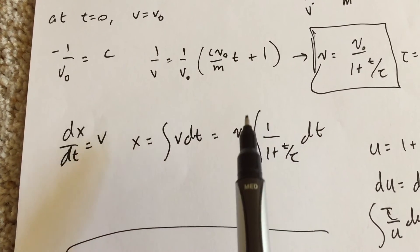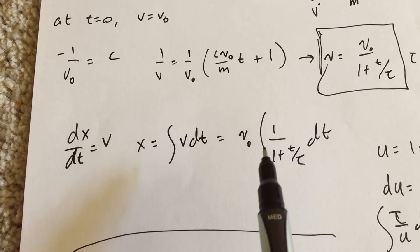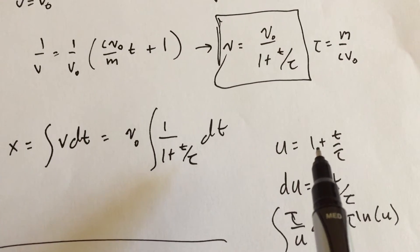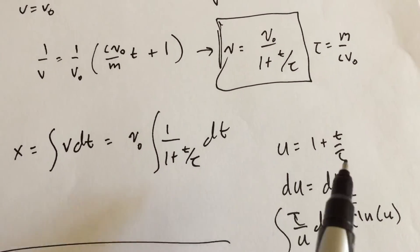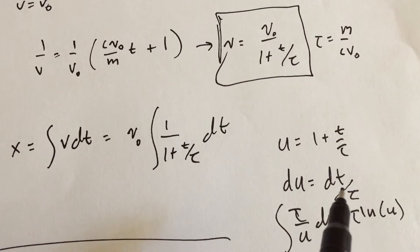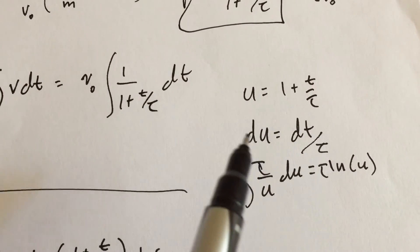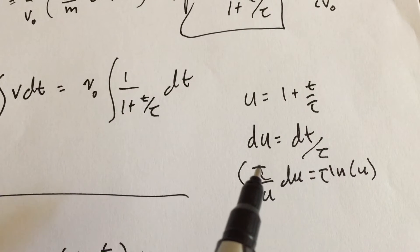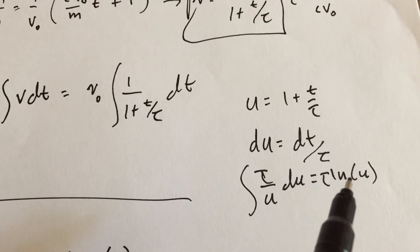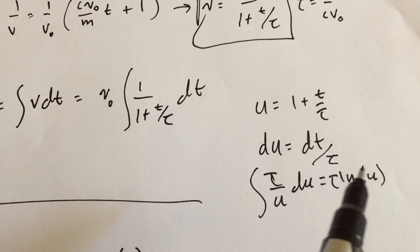Let's just call this bottom part, this whole bottom part, u. So I get u equals 1 plus t over tau, then the derivative du would be dt over tau. So I can substitute that in, and I get this integral, I left off the v₀, is tau over u du, and I know the integral to that is natural log of u, and then I can put this back in. Okay, that's just substitution.